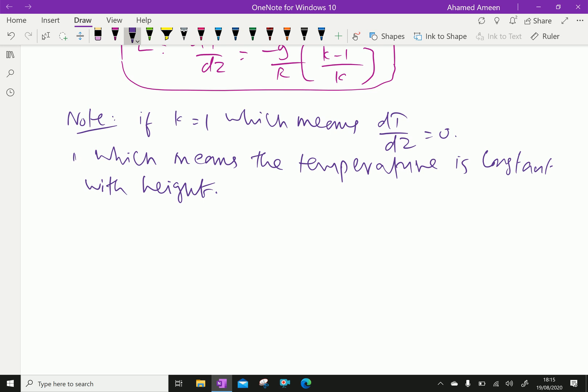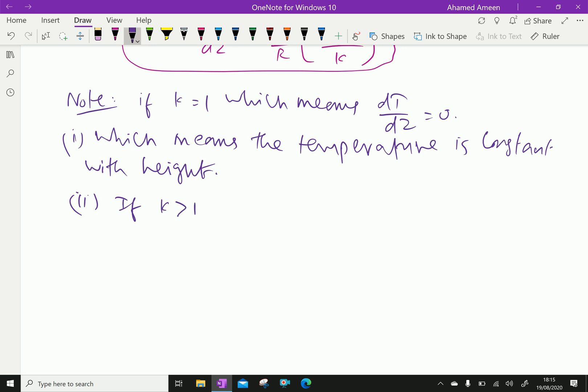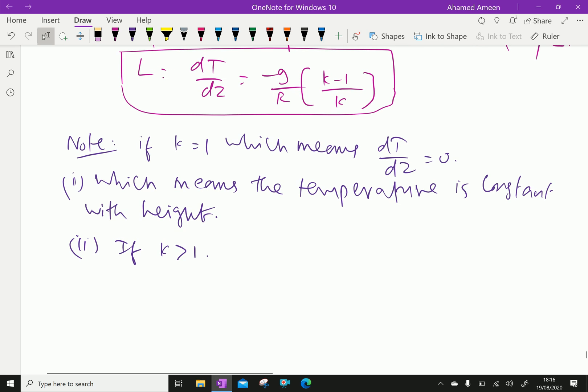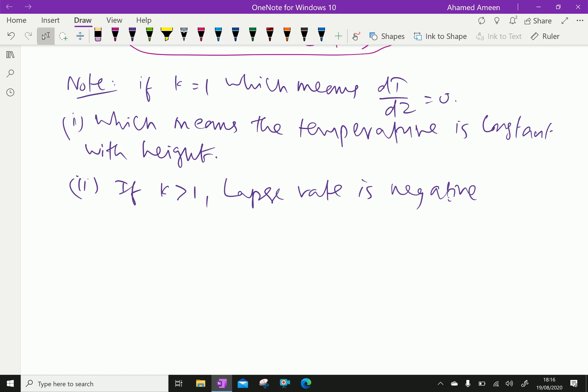The second, if k is greater than 1, the lapse rate is negative, because this k is greater than 1 means here it is positive, but negative is out. Therefore, lapse rate is negative, which means the temperature decreases with increase of height.